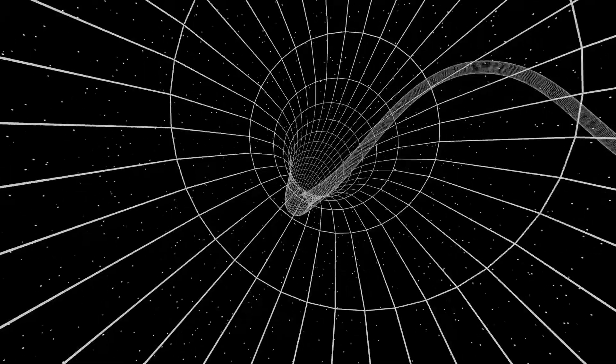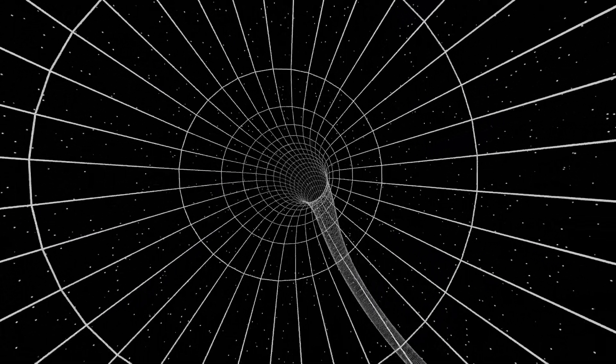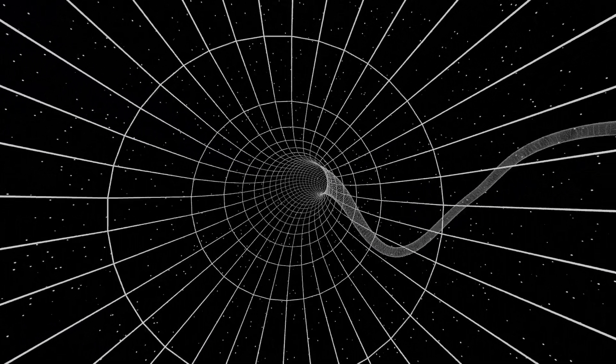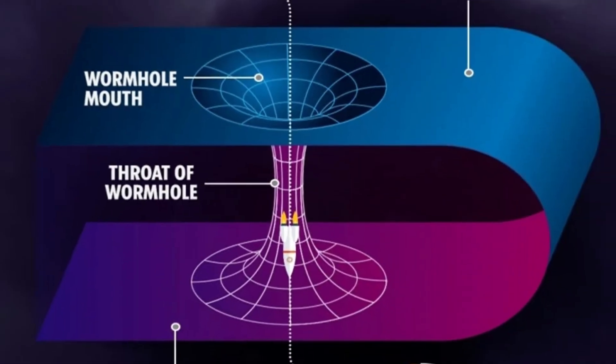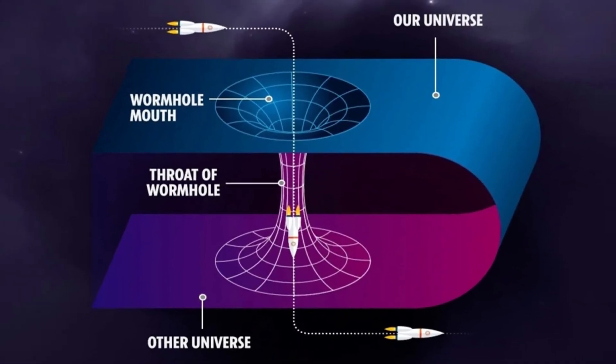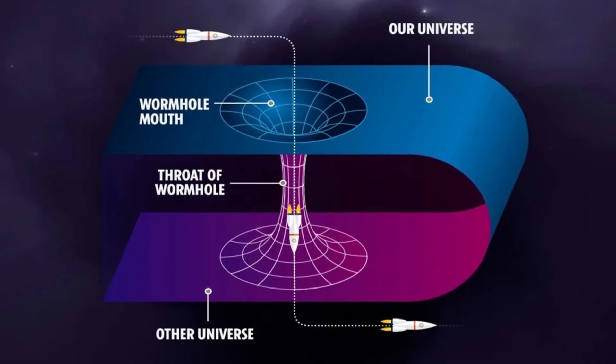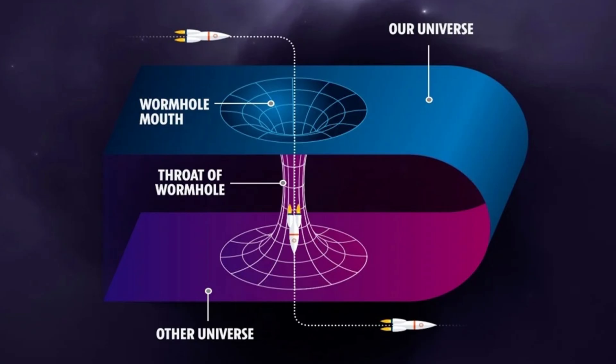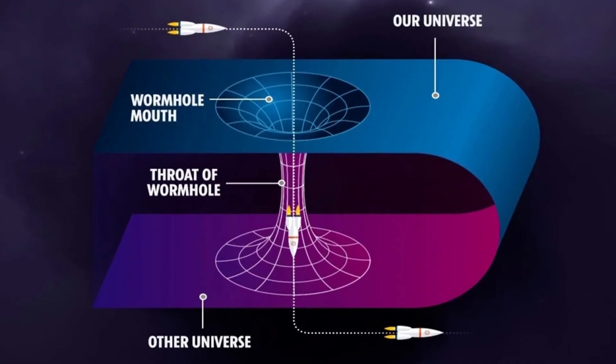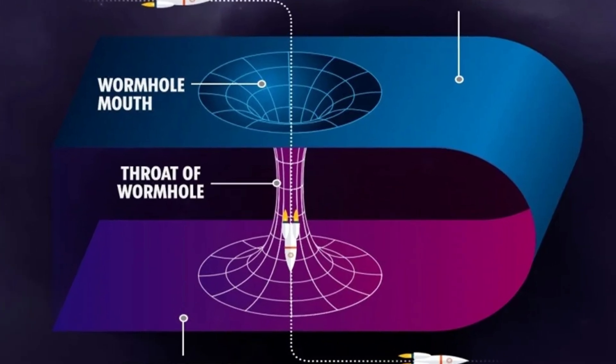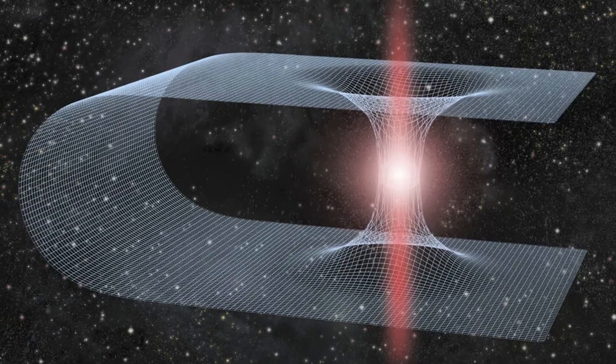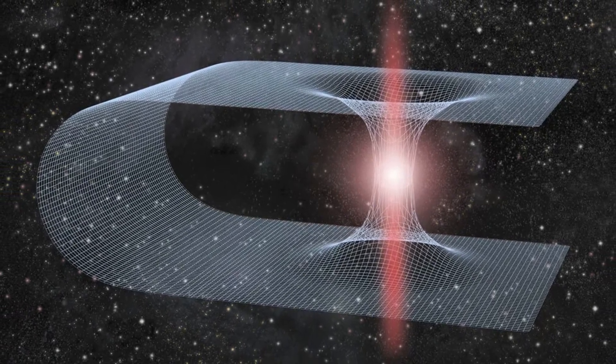A wormhole, first theorized as an Einstein-Rosen bridge, is a hypothetical tunnel, a cosmic shortcut through the very fabric of space-time. For decades, it has been the exclusive domain of theoretical physics and science fiction, a fascinating but unprovable concept of a bridge that could connect two impossibly distant points in our universe, or even cross the membrane that separates dimensions. The established science says that if they could exist at all, they would be catastrophically unstable, collapsing into a singularity the instant they form, allowing nothing to pass through.